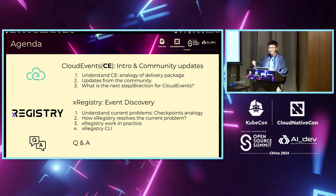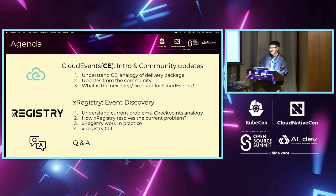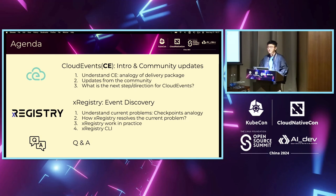For today's presentation, we're going to split into three different parts. The first part is Cloud Events — covering what Cloud Events is by using some analogy, sharing some updates from the community, and mentioning the next steps and direction. The second section, we're going to go over X-Registry, introducing it with a package delivery example and seeing some code working practice. And if we have time, we'll go over some Q&A.